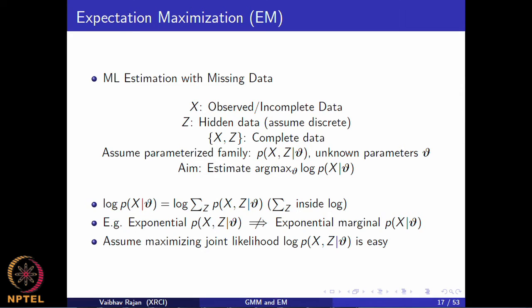In general, EM had been proposed for data which has some hidden data points not known when you get the dataset. We denote that hidden data by Z — for this discussion, we assume it is discrete. In the case of Gaussian mixture models, we can take the latent variables to be hidden. That is a common trick used in many other models. EM is a good approach to take when the complete data likelihood can be easily parameterized.